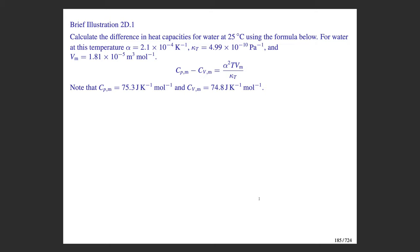There's a fairly general expression for the difference between the constant-pressure and constant-volume heat capacities, Cp − Cv, involving α, κT, molar volume, and temperature. All of these quantities are given in the problem, so you substitute them in and calculate the number, then compare to an explicit calculation of the difference. I'll leave that as an exercise for you to explore on your own.